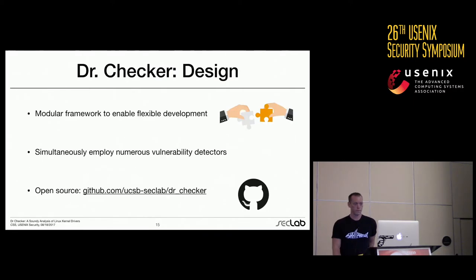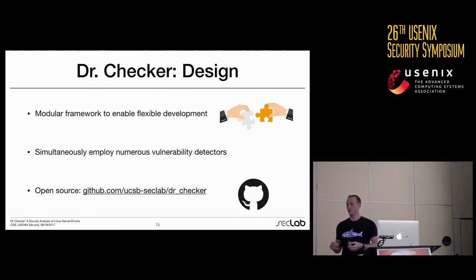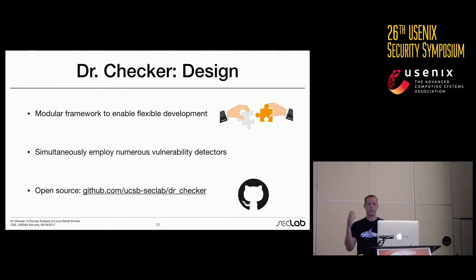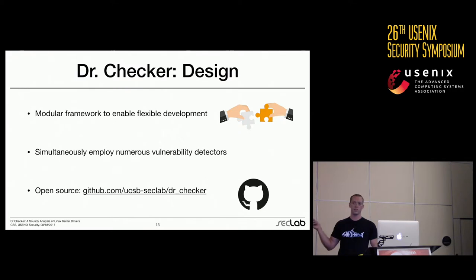The design of Dr. Checker was intended to be very flexible — a modular framework. In fact, as we were writing the paper, a type of bug involving global variables kept coming up, and in the last week of writing we implemented a new detector and found 11 more bugs. It's really easy to take an idea, write it down, rerun your analysis, and get results. It's also one of the first tools that can simultaneously employ numerous vulnerability detectors. We've also open-sourced the entire project — it is on GitHub as of yesterday morning.